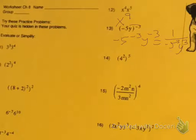Number 14, we need to use our power raised to the power rule and multiply the exponents. And we get 4 to the 10th.